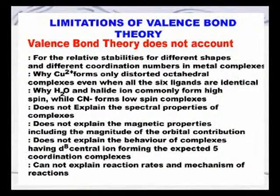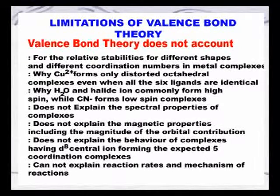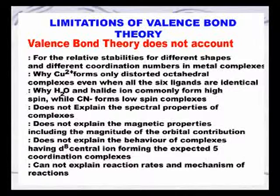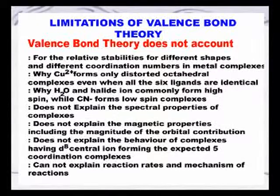Finally, let us discuss the limitations of valence bond theory. Number one, this theory does not clearly explain certain coordination numbers, especially coordination number 5. Second, this theory does not clearly explain distorted octahedral complexes instead of perfect octahedral. This theory also does not explain the spectral properties of complexes, nor does it explain the magnetic properties including the magnitude of orbital contribution, nor the rates of reactions of the complexes. So valence bond theory has certain limitations — we can only get an idea about geometry and how complexes are formed.